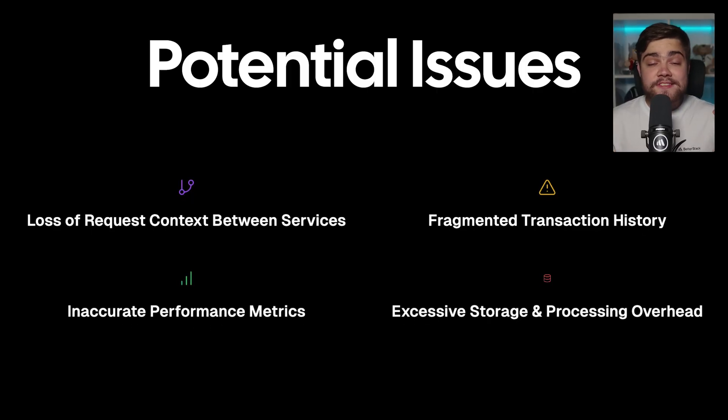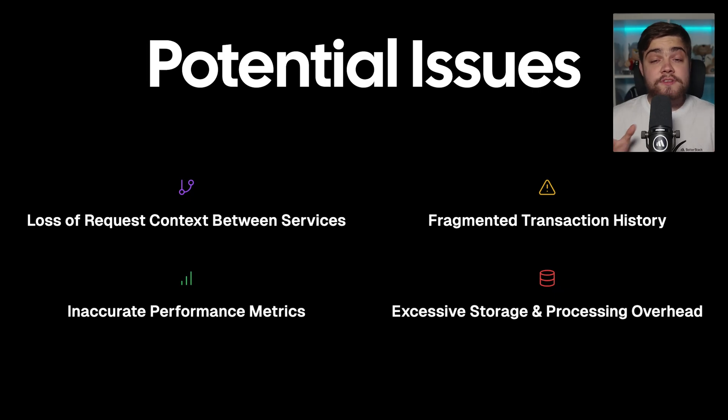Remember, the trace is your entire order, start to finish — the complete story of a request — whereas spans are your individual steps for that request: cooking, delivering, and more. This confusion isn't just about semantics; it can cause real problems. If you implement traces where you should have been adding spans, you risk losing context between your services, you risk not being able to construct the full flow, and you risk having misleading data. For example, a team struggling to debug a payment processing issue might have 20 separate traces instead of one trace with 20 spans, spending hours trying to piece together what should have been a single coherent story.